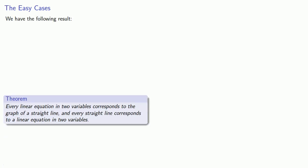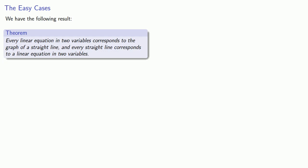We have the following result: every linear equation in two variables corresponds to the graph of a straight line, and every straight line corresponds to a linear equation in two variables. So the problem is, given a line, how do we find its equation?